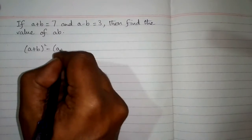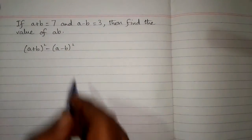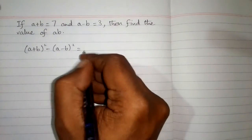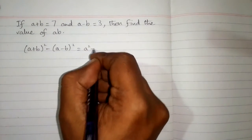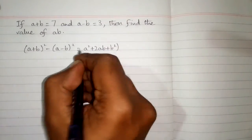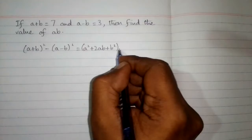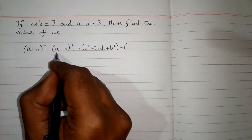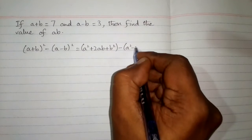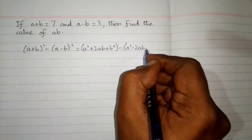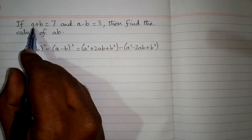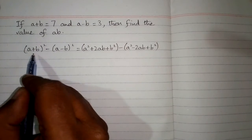So a plus b whole square is equal to a square plus 2ab plus b square, and then minus sign, and a minus b whole square is equal to a square minus 2ab plus b square.